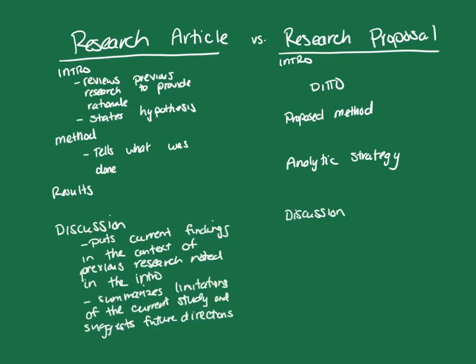Each of these papers also has a discussion section. In a research article, the discussion is about the current findings and what those mean in light of the previous research noted in the introduction. The discussion draws from citations in the introduction and talks about how the current findings do or do not mirror what was found in other research, trying to give context as to why — such as differences in method. The discussion of a research article also summarizes the limitations of the current study and suggests future directions for research.